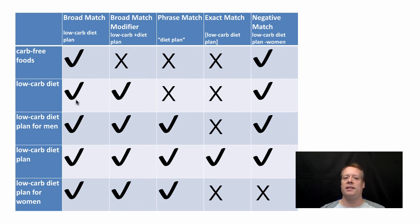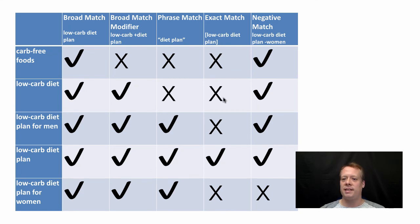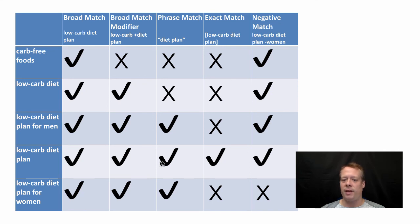'Low-carb diet' will match against broad match because it's contained within it. It won't match the broad match modifier because there's no plus in front of 'plan', and it won't match phrase match because 'plan' is not in there. It will match against the negative match because 'women' isn't mentioned. 'Low-carb diet plan for men' will match against broad match, broad match modifier, and phrase match because it includes 'diet plan', but won't match exact phrase — it will match the negative match. The phrase 'low-carb diet plan' itself matches against all match types.